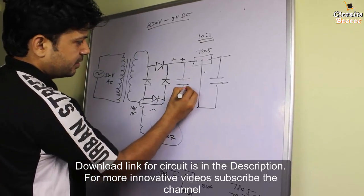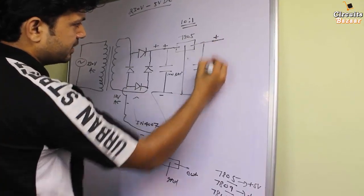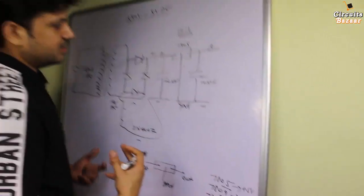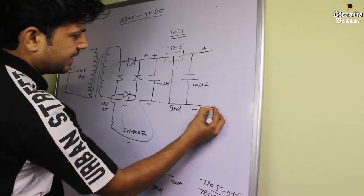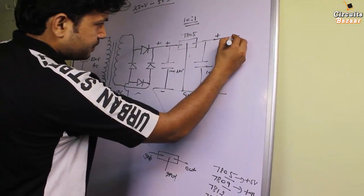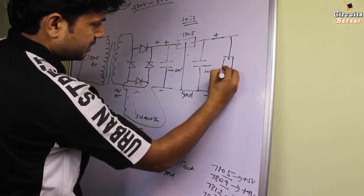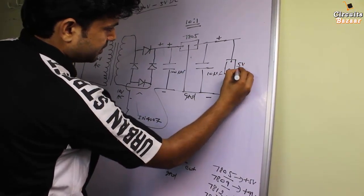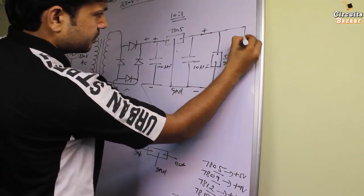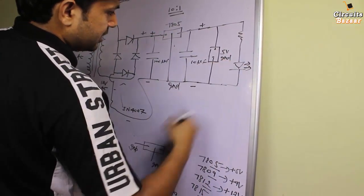You can use capacitors of 100 microfarad and 10 microfarad. The voltage you will get at the output is plus 5 volt, and this is the ground line. Since you cannot see current through a wire directly, you can use an LED as an indicator so you know you have successfully converted 230 volt AC into 5 volt DC. On the two-pin connector there is 5 volt and ground, so you can connect an LED in parallel.